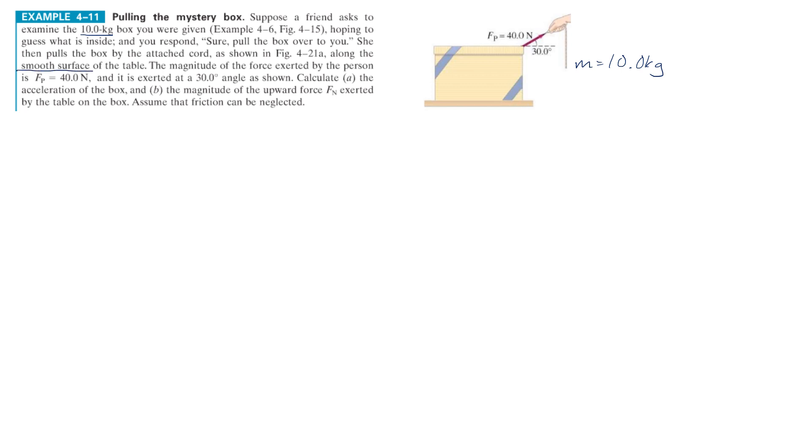She then pulls the box attached by the cord as shown along a smooth surface. That means there's zero friction. The magnitude of the force exerted by the person is 40 Newtons, that's already in the diagram, and it's exerted at a 30 degree angle. Calculate the acceleration of the box, that's A, and then the magnitude of the upward normal force. Okay, so we don't have a lot of information, but typically if we do a free body diagram, it's going to clarify things.